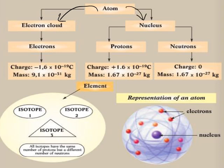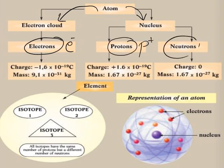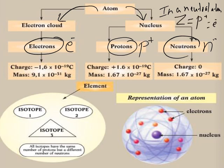The electron cloud is made up of negatively charged particles orbiting around the nucleus. In a neutral atom, Z equals P+ equals E−. Isotopes are elements that have the same atomic number but different mass numbers.